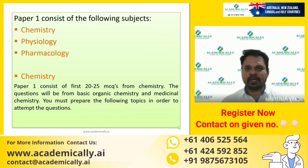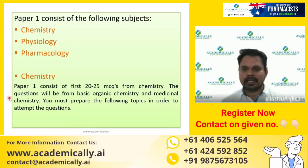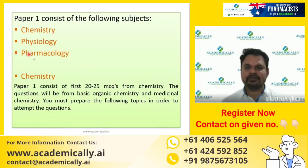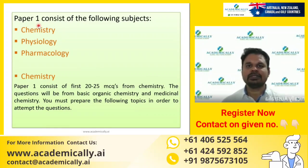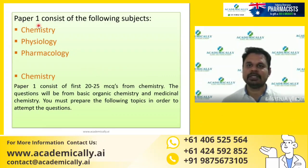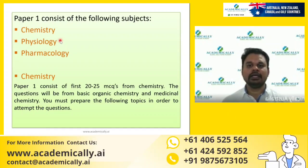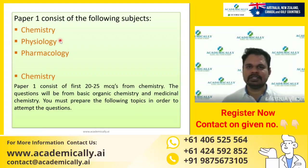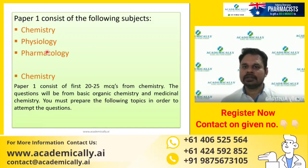In Paper 1, the three main core subjects are pharmaceutical chemistry, physiology, and pharmacology. Chemistry carries around 30% weightage, and the remaining 70% is for physiology and pharmacology combined. Within that 70%, physiology accounts for around 10% of questions and the rest goes to pharmacology.